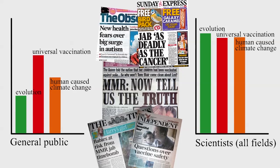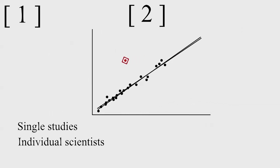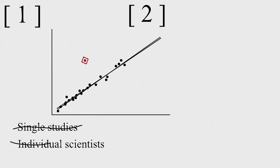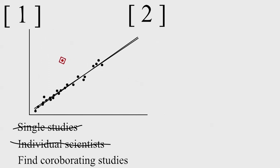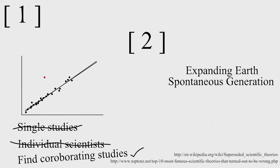There are two important takeaways here. First, individual scientists and studies, no matter how well respected or devised, can come to the wrong conclusion or be an incomplete account of a larger picture, so considering them apart from other research is usually a very bad idea.